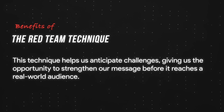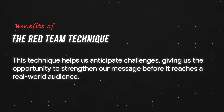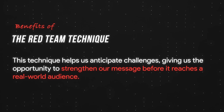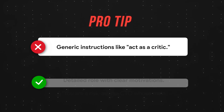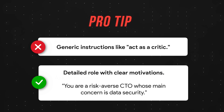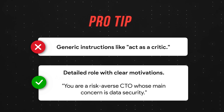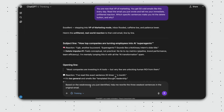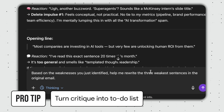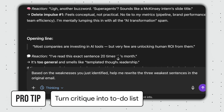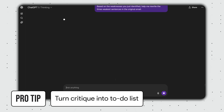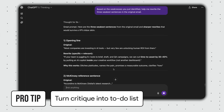As you can see, the red team technique helps us anticipate challenges, giving us the opportunity to strengthen our message before it reaches a real-world audience. Pro tip: be extremely specific with the persona you ask the AI to adopt. Don't just say act as a critic — give it a detailed role with clear motivations, like you are a risk-averse CTO whose main concern is data security. The more specific the persona, the more insightful the feedback. Pro tip number two: turn the AI's critique into an actionable to-do list. Use another follow-up prompt like — based on the weaknesses you've just identified, help me rewrite the three weakest sentences in the original email. This closes the loop and helps you instantly improve your work based on the feedback.